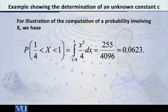Now that we have got this value of c, let me illustrate the utilization of this PDF for the computation of a particular probability. Suppose that I am interested in finding the probability that the random variable x lies between 1/4 and 1.